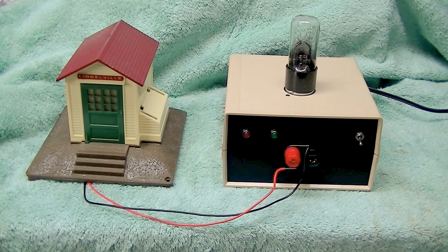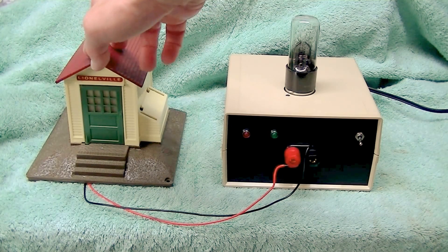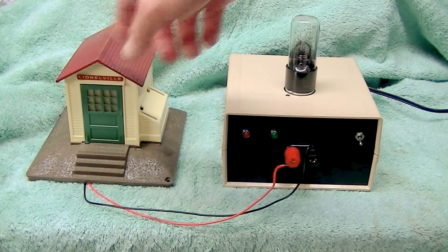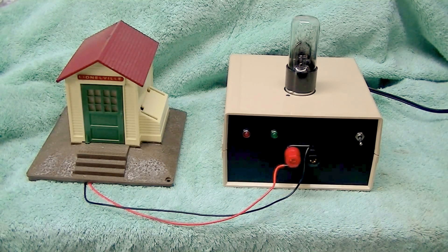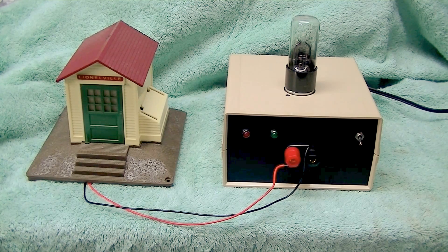Today we're going to demonstrate the kit with a typical model railroad application. We have a vintage Lionel whistle station. It has a DC motor that drives an impeller to provide a mechanical whistle sound effect. When we connect it to the power supply you will see the resulting glow.